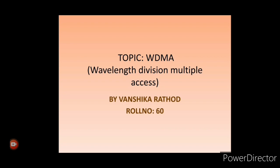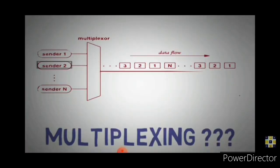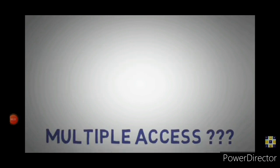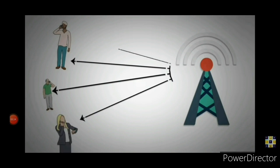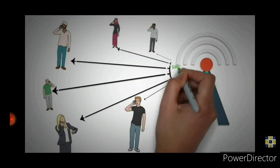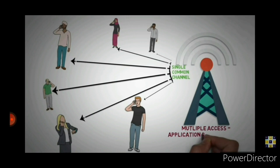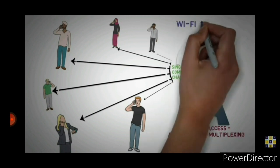Multiplexing is the process of combining signals and transmitting them over the same channel. Multiple access is when multiplexing allows users to communicate over a single common channel. It can be said that multiple access is the application of multiplexing.